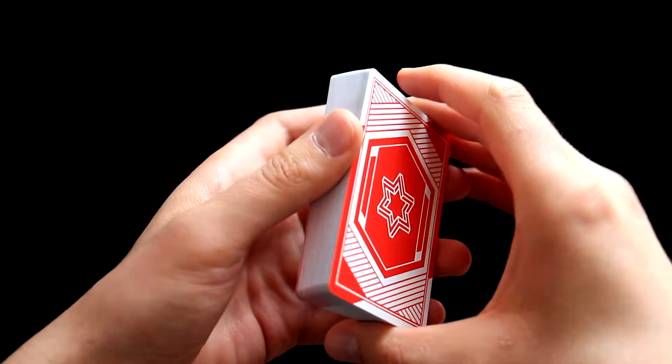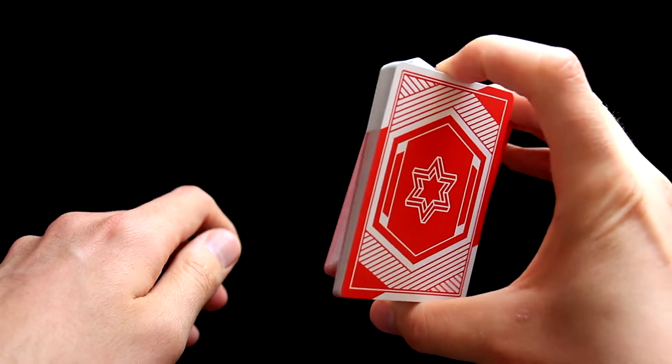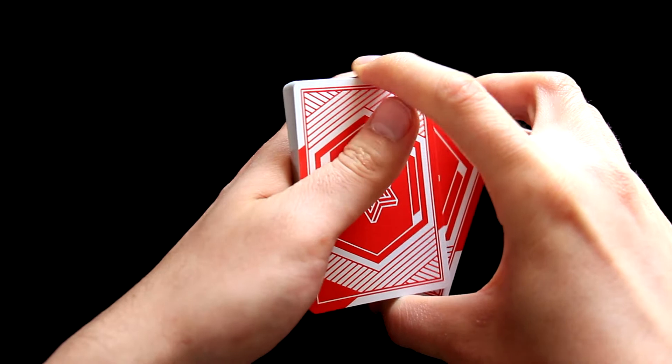This cut is actually very easy. You will hold the deck like this, and now you will cut a portion of cards with this finger and take them with your opposite hand like this.